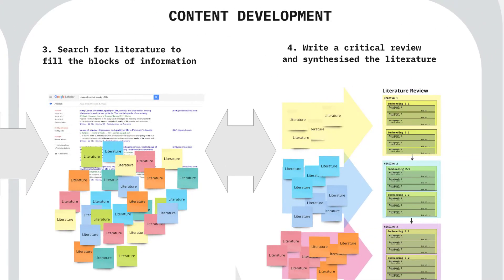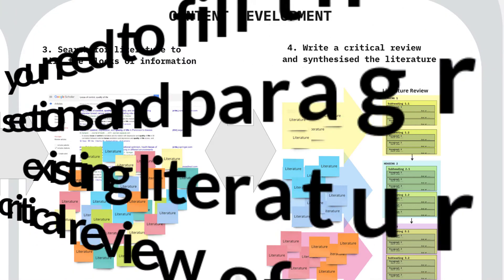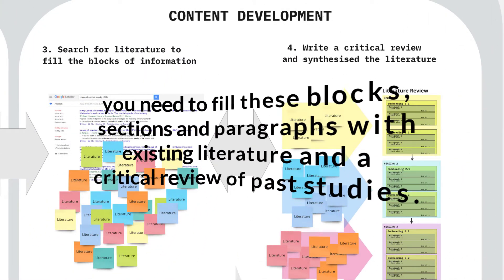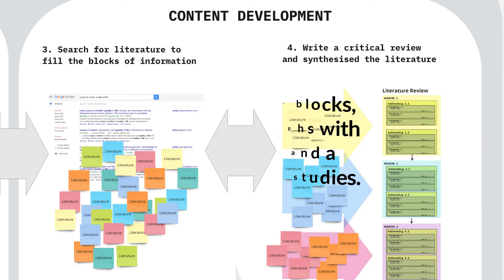Part B: fill the sections and paragraphs in this structure. Now that you have designed the structure and blocks of information of your literature review, you need to fill these blocks, sections, and paragraphs with existing literature and a critical review of past studies.